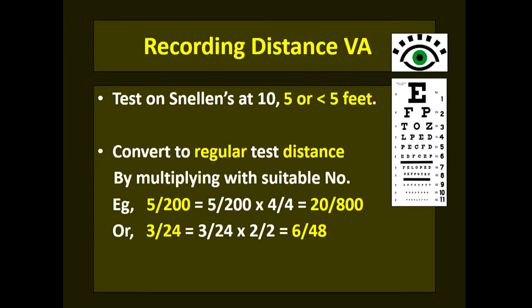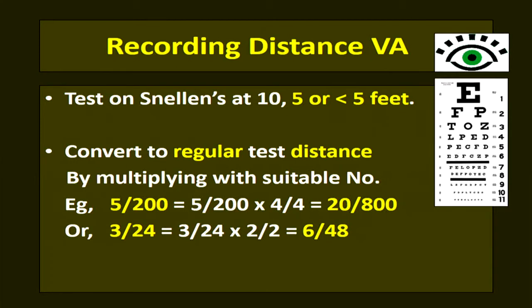Once vision is recorded at a smaller distance, it is converted to the standard 20-foot or 6-meter notation by multiplying by a suitable factor. For example, if testing at 5 feet and the patient reads only the top line, vision is 5/200, which multiplied by 4 gives 20/800. Similarly, if using British notation and vision at 3 meters is 3/24, multiplying by 2 gives 6/48 — a familiar notation.